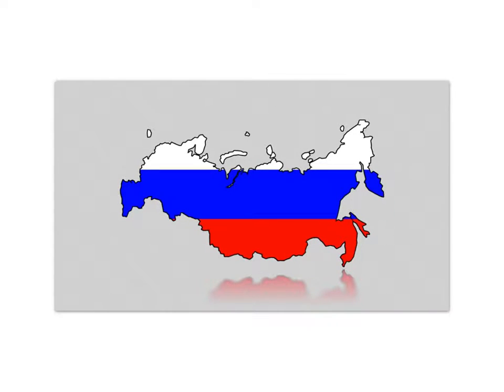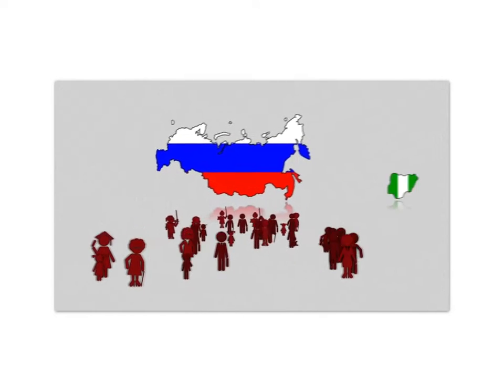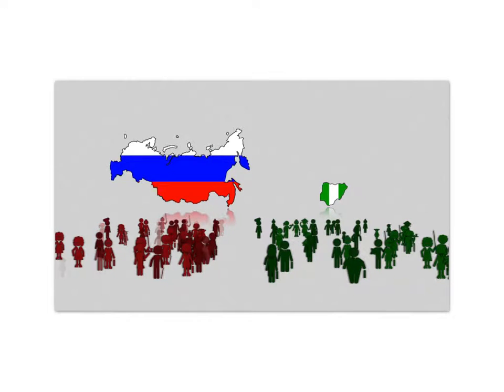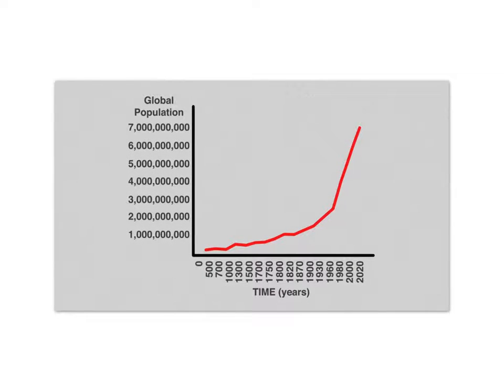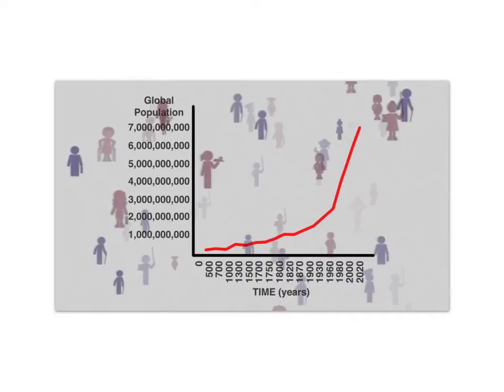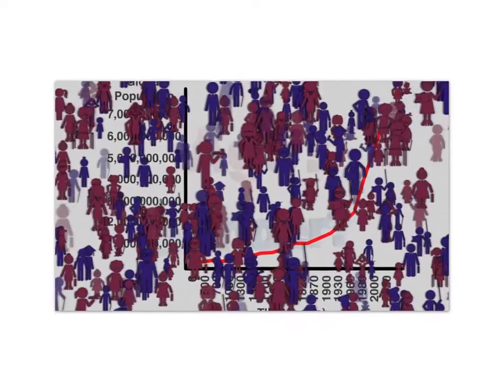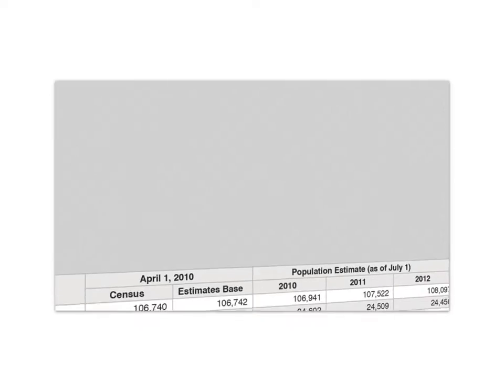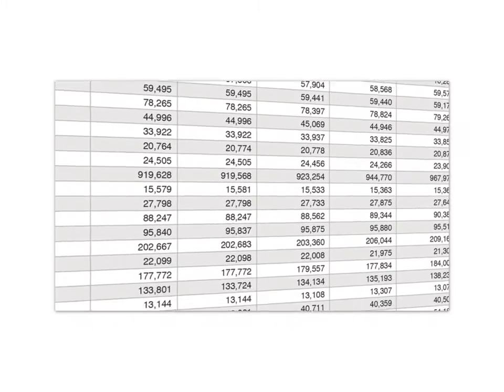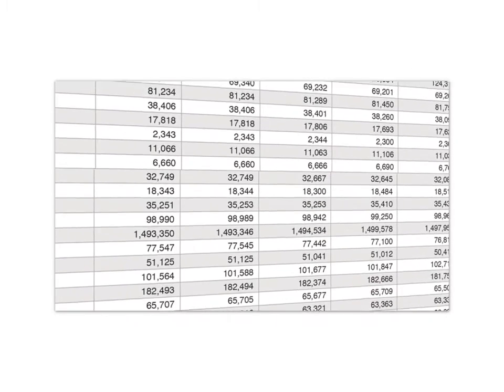Russia, with the largest territory in the world, has roughly the same total population as Nigeria, a country one-sixteenth its size. But this similarity won't last long — one population is rapidly growing while the other is slowly declining. Population statistics are some of the most important data social scientists and policy experts work with. Understanding a country's situation requires knowing not just the total population size, but its internal characteristics such as age and gender distribution. Complex data is more easily interpreted through visualization, and one way demographers represent population distribution is the population pyramid.